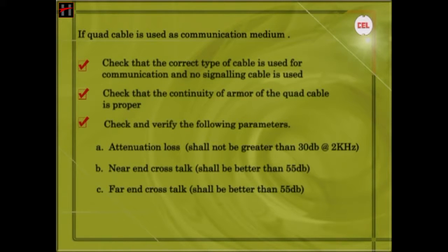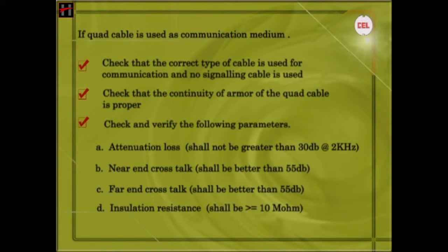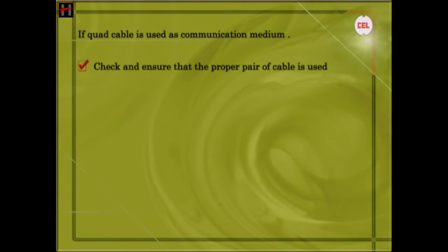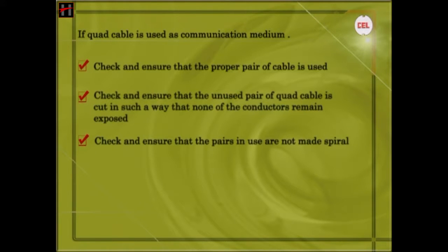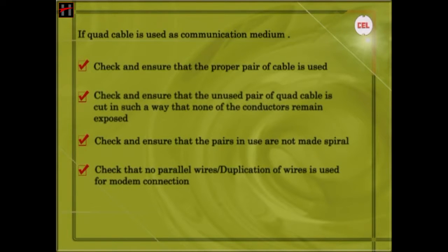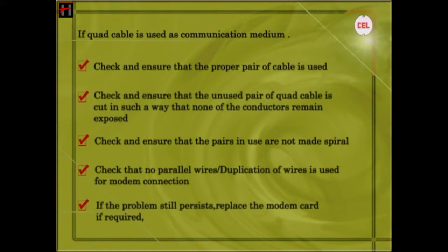The far end crosstalk shall be better than 55 dB, and the insulation resistance of the quad cable shall be greater than or equal to 10 mega ohms. Check and ensure that the proper pair of cable is used. Check and ensure that the unused pair of quad cable is cut in such a way that none of the conductors remain exposed. Check that the pairs in use are not made spiral, and check that no parallel wires or duplication of wires is used for modem connection. If the problem still persists, replace the modem card if required.